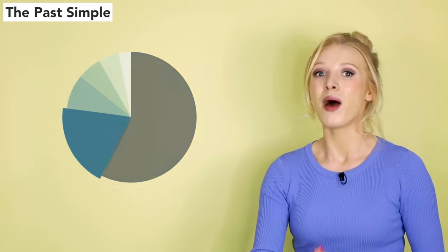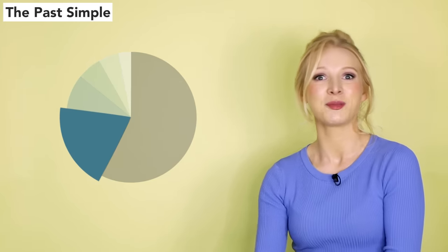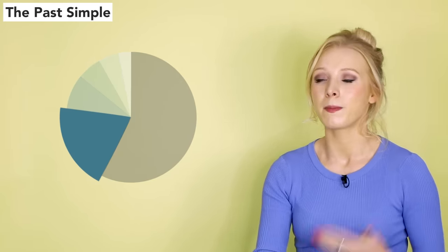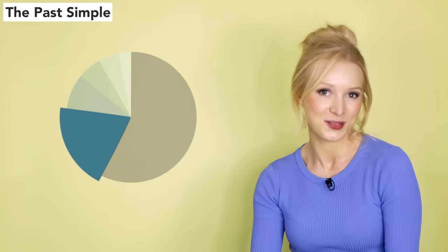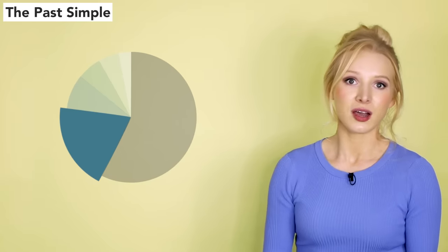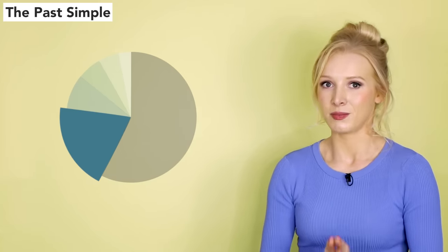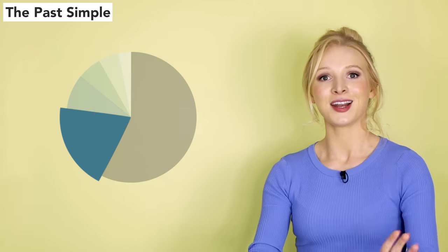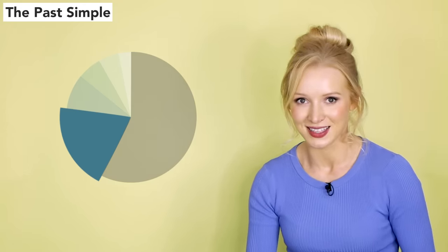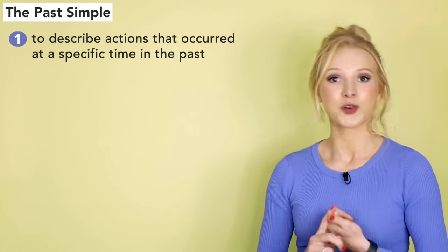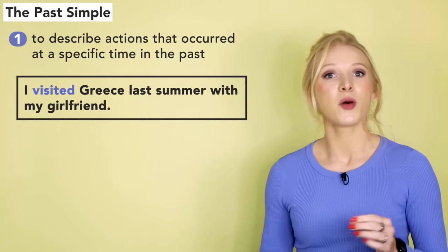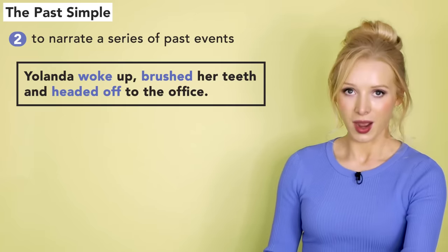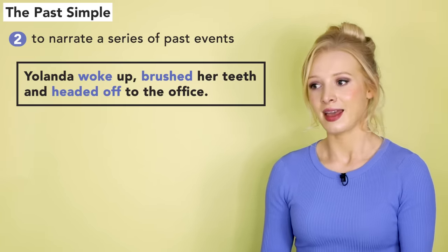Next up, we have the past simple. Of course, this is the second most used verb tense because we use it to talk about completed actions in the past, and we sure do love to talk about the past. Look at a news article or pick up your favourite book — most of them rely heavily on the past simple tense. It's commonly used to describe actions that occurred at a specific time in the past: 'I visited Greece last summer with my girlfriend.' It's also used to narrate a series of past events: 'Yolanda woke up, brushed her teeth and headed off to the office.'